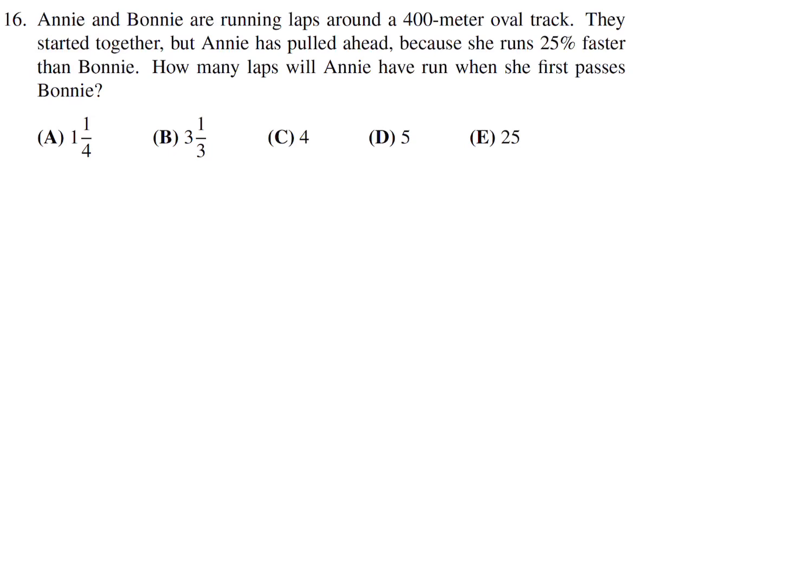Ani and Bonnie are running laps around a 400 meter oval track. They started running together, but Ani has pulled ahead because she runs 25% faster than Bonnie. How many laps will Ani have run when she first passes Bonnie? We have Ani and Bonnie and their speeds SA and SB. Ani's speed is 25% faster, so 1.25 times SB. We use the formula speed equals distance over time. When they first meet, the times are equal.